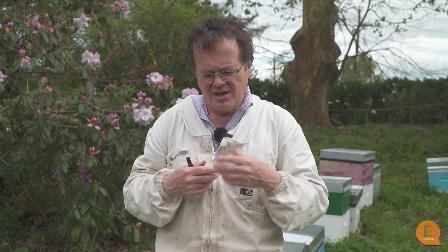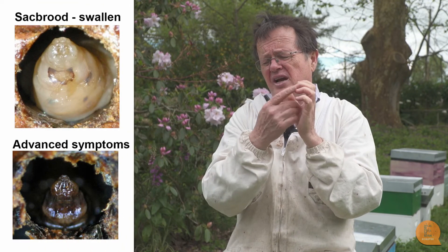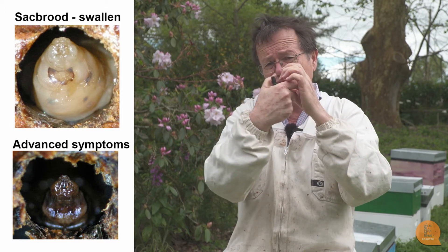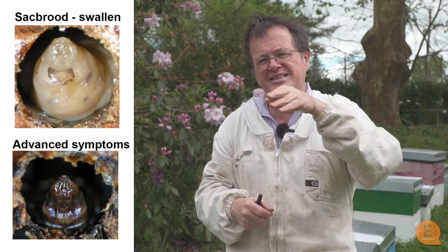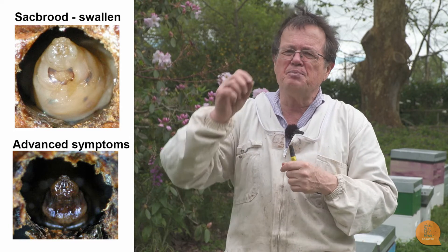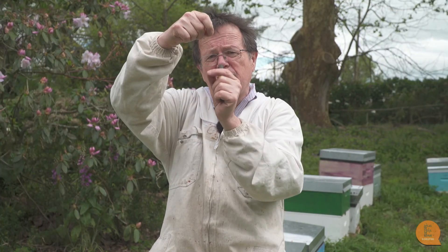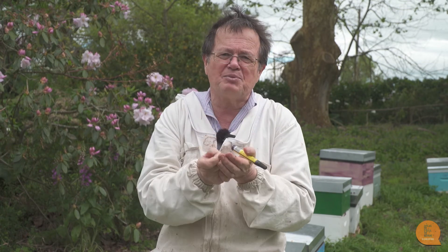Sac brood is a virus that makes the larvae watery. They can be quite plump and fill up the cell as the tissues are consumed and fluid produced. They tend to sink down and be off-coloured — grey or black. If you can pull one out with tweezers — you probably can't do it with a hive tool — and hold it up, you'll see a big fluid-filled sac underneath it. That is classic for sac brood virus.